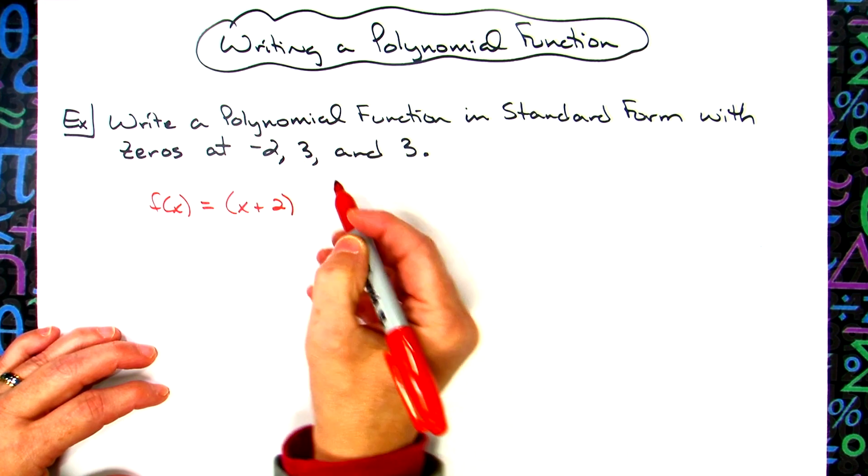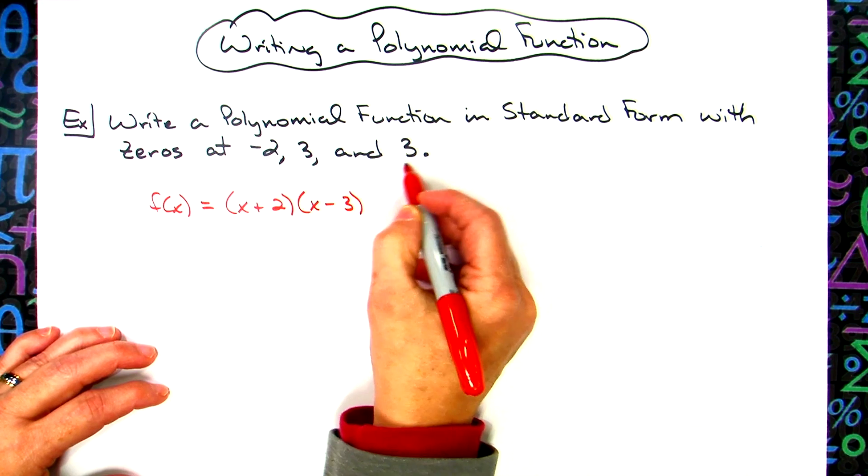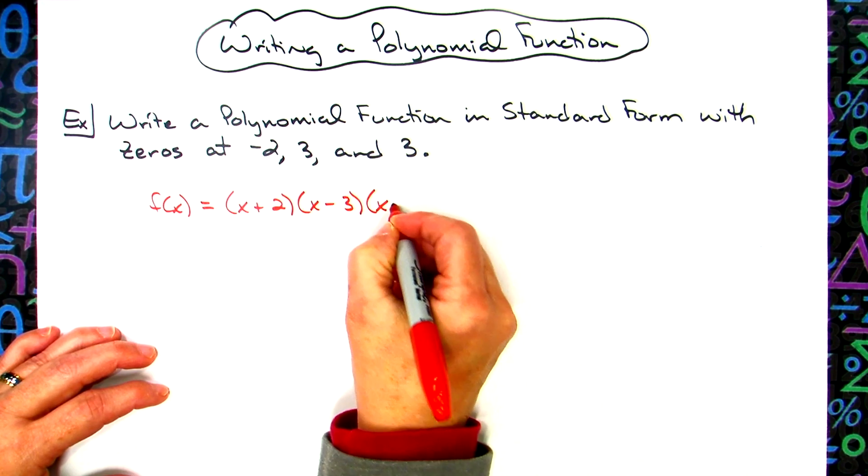This three right here is a positive three, so our factor will be an x minus three. And then this is another factor, which will be an x minus three.